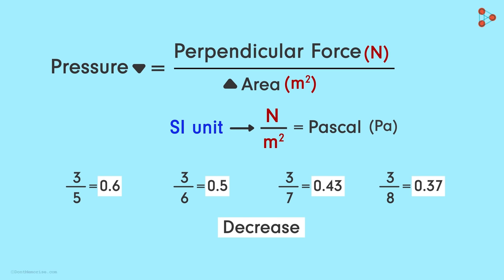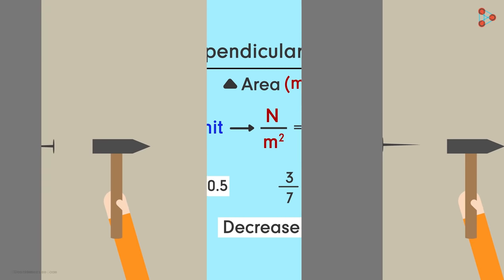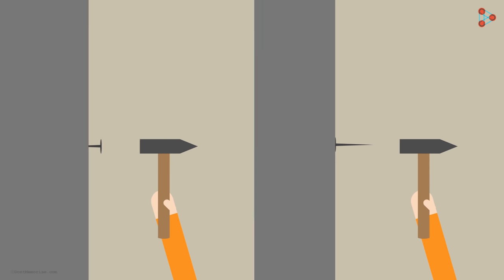With this newfound knowledge, let's go back to the example we saw earlier. The nail and the wall. Notice that we are also applying the force perpendicular to the surface of the wall. The angle between the nail and the wall is 90 degrees and not anything else.